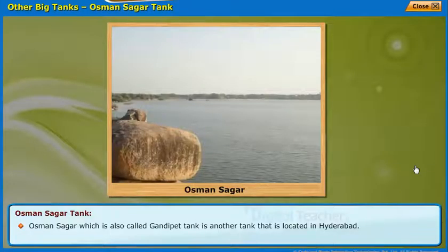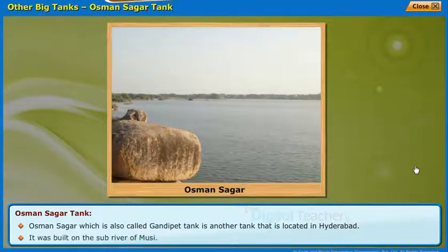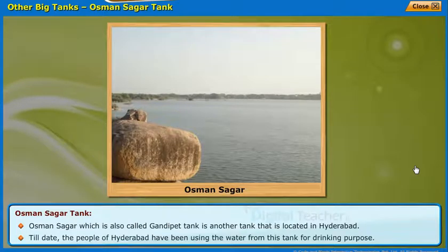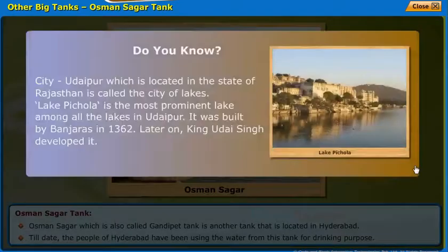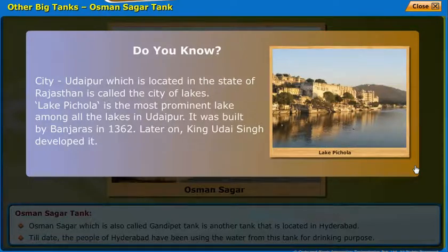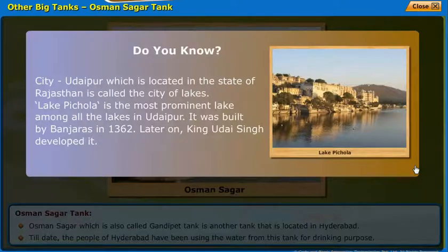Usman Sagar, which is also called Gandipet tank, is another tank located in Hyderabad. It was built on the sub-river of Musi. Till date, the people of Hyderabad have been using the water from this tank for drinking purpose. Additionally, the city of Udaipur, located in the state of Rajasthan, is called the city of lakes. Lake Pichola is the most prominent lake among all the lakes in Udaipur. It was built by Banjaras in 1362, and later King Udai Singh developed it.